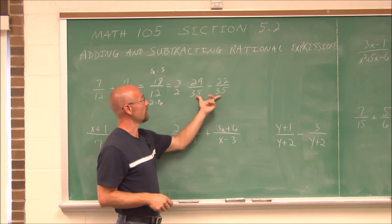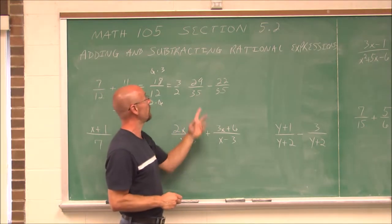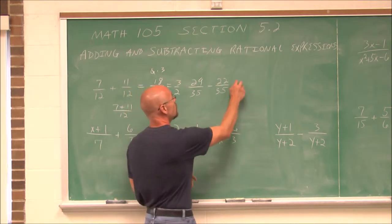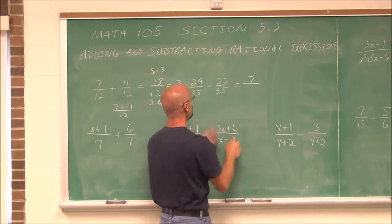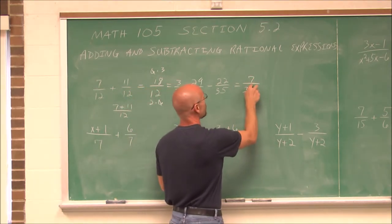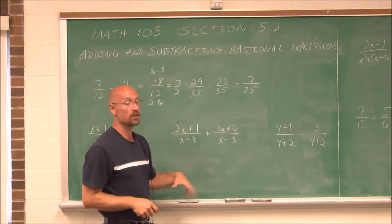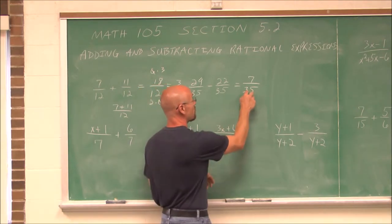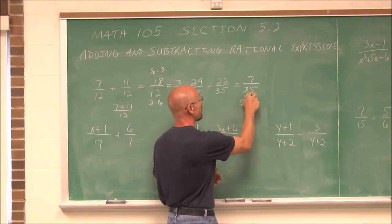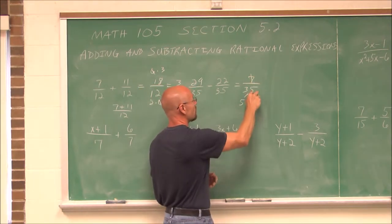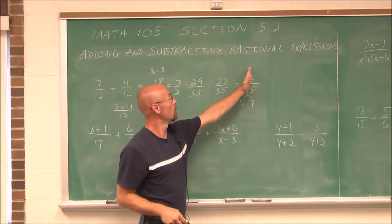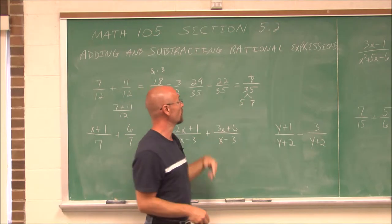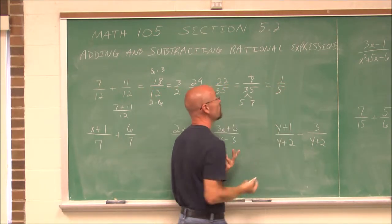Here we see they have a common denominator of 35, so we can just subtract their numerators. 29 minus 22 gives us 7 over 35. This also reduces — 7 and 35 have a common factor, since 35 is 5 times 7. The 7 cancels, and any number divided by itself is 1. So we get 1 over 5, or 1 fifth.